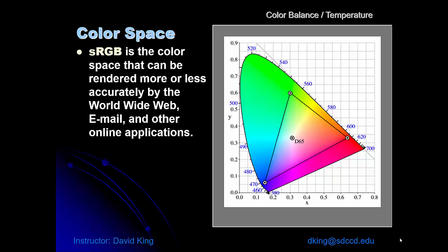sRGB, and the S comes from Sony, is the color space that can be rendered more or less accurately by television. This was the space initially created for the Sony Trinitron. It can be represented accurately by the web, computers, email, other computer-based applications. The problem is that space inside the triangle represents around 30 to 35 percent of the colors that the human eye can actually see.